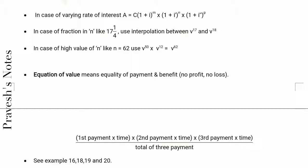In case of varying rate of interest: A = C(1 + i)^m × (1 + i)^n × (1 + i)^p.